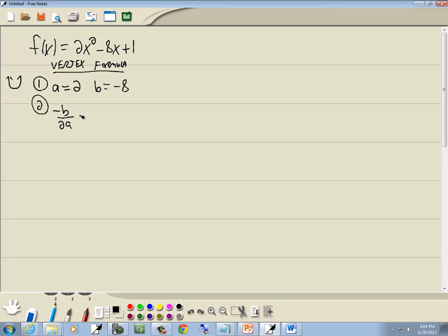Second step in the vertex formula is to plug in those values into negative b over 2a. So I've got negative negative 8 over 2 times 2. Negative negative gives us positive 8. 2 times 2 gives you 4. And 8 divided by 4 is 2.